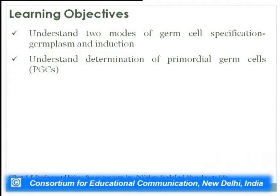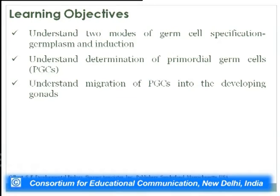Today we will be talking about how these gametes are formed. The specific learning objectives for today are: to understand the two modes of germ cell specification — germ plasm and induction — to understand the determination of primordial germ cells (PGCs), and to understand the migration of PGCs into the developing gonads.